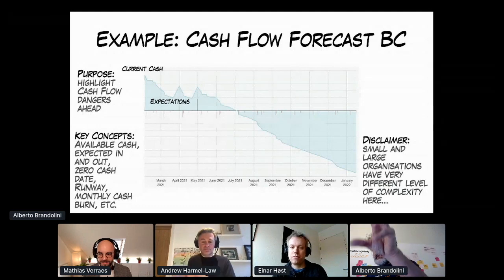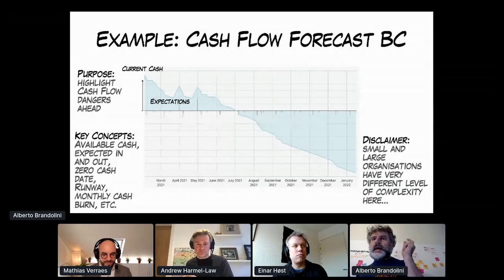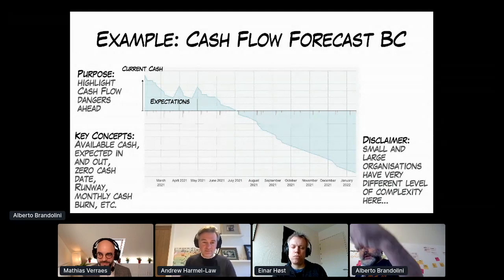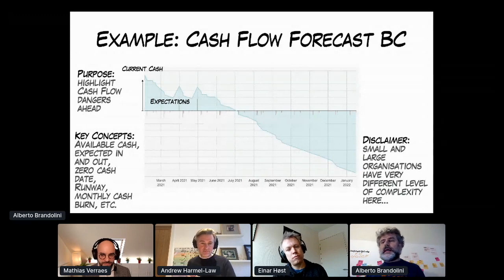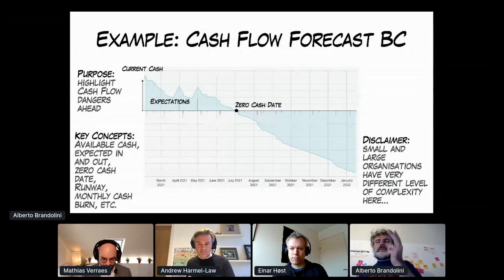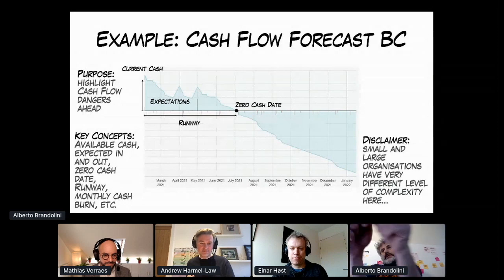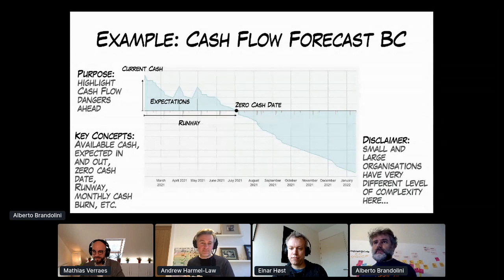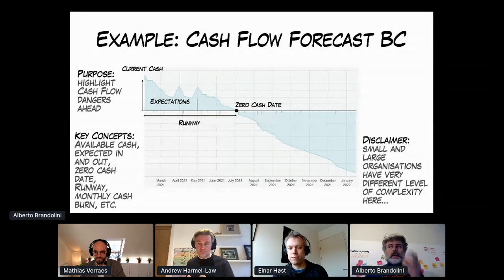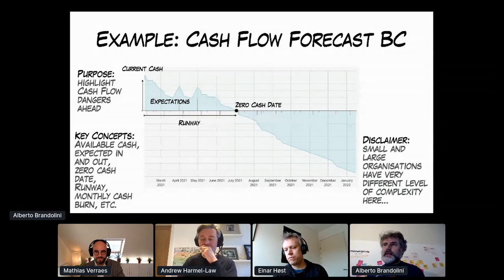We have two concepts which are relevant: what is the current cash at a given moment — that's at the beginning. We have expectations coming in and out — bills coming in, payments incoming or payments that we have to do, salaries and so on. This point is what is called the zero cash date, very popular in the startup land. And this other distance is the runway — the number of days the organization can survive with the current cash plus-minus the expectations. That's all we needed in this area.